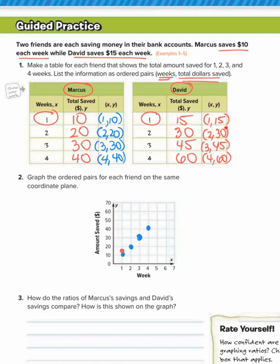Then we have (2, 30). So 2 to the right, up 30. Then we have (3, 45). 3 to the right, up to 45. This is 40, this is 50. I've got to go right in the middle. So 3 to the right, up 45. Lastly, we have (4, 60). 4 to the right, up 60.